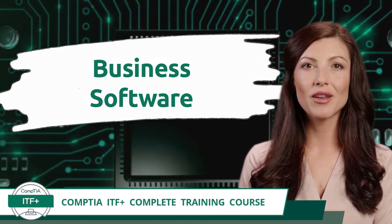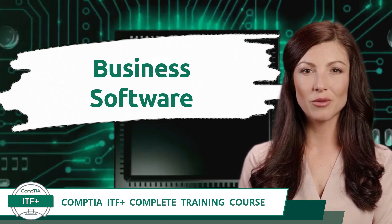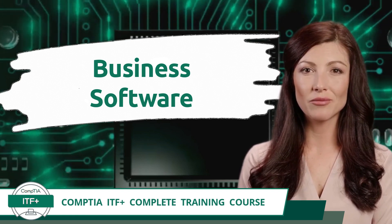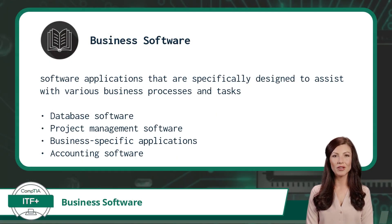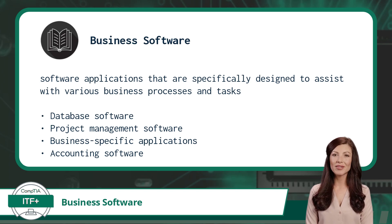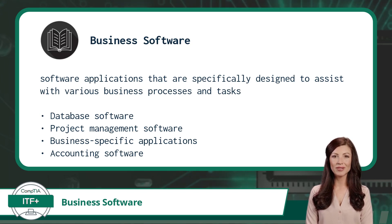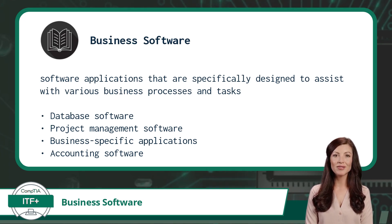CompTIA ITF Plus Complete Training Course. Exam Objective 3.3: Explain the Purpose and Proper Use of Software. Business software refers to software applications specifically designed to assist with various business processes and tasks. Business software helps organizations streamline operations, improve efficiency, and make informed decisions by managing and processing data effectively. Some types of business software include Database Software, Project Management Software, Business Specific Applications, and Accounting Software. Now let's examine each one of these business software types, one at a time.